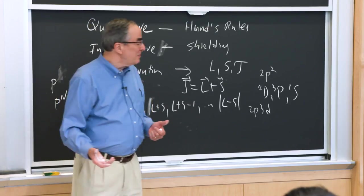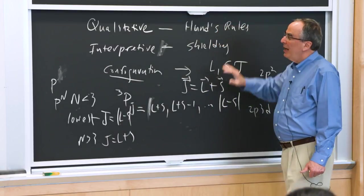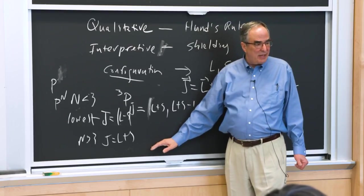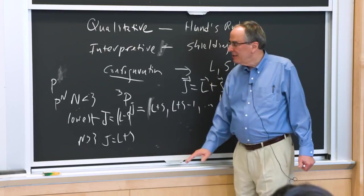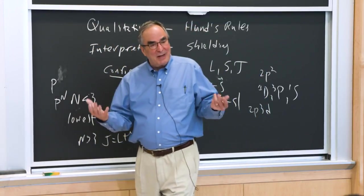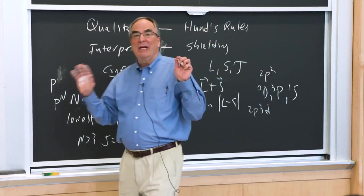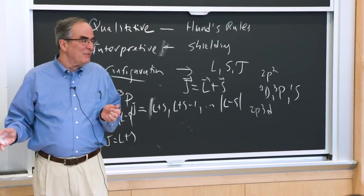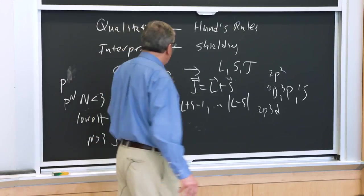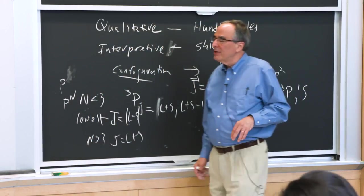OK. So Hund's rules tell you how to identify, without knowing beans, what is the lowest energy state. And it's never wrong. And well, maybe sometimes wrong, but that's because of one of my things where you have a perturbation between states belonging to two configurations. But people get really excited when they discover a violation of Hund's rules. And it's just trivial. So there's this. And then, what time is it? I have a few minutes to talk about shielding, and I will.